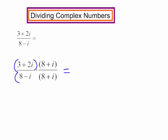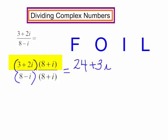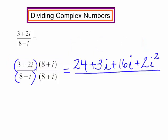Now I would like to put parentheses around the complex numbers to make sure I do not make a careless error. In the numerator, we have a binomial times a binomial. Let's use FOIL. We now multiply the first terms, 3 times 8, that will be 24. The outer terms, 3 times i. The inner terms, 2i times 8. And the last terms, 2i times i will be 2i squared. I have some more simplifying to do in the numerator.